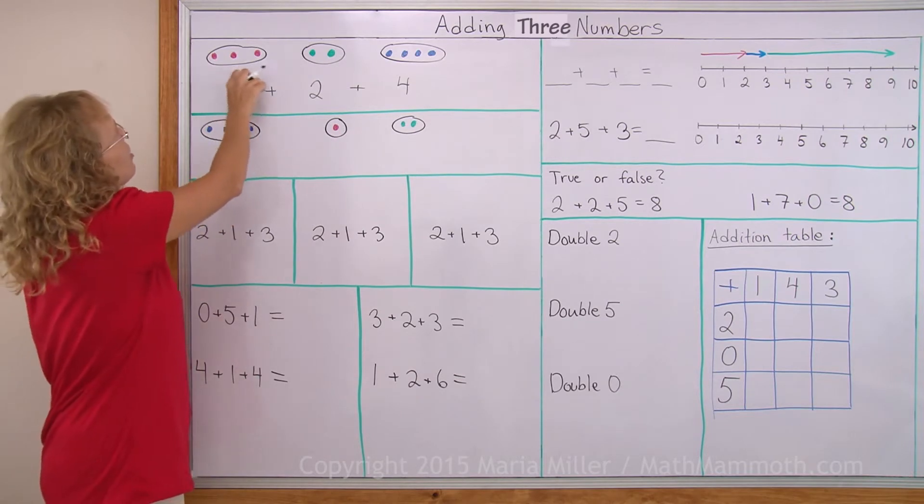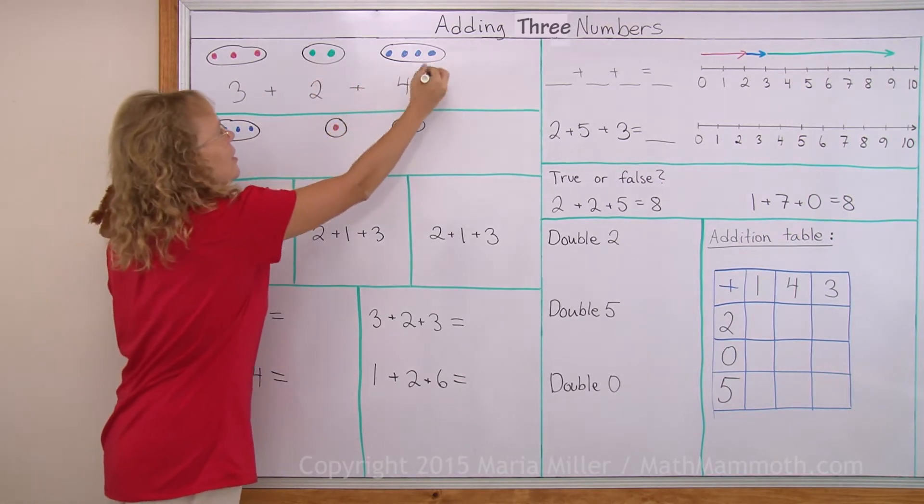I can count one, two, three, four, five, six, seven, eight, nine. So I get nine.